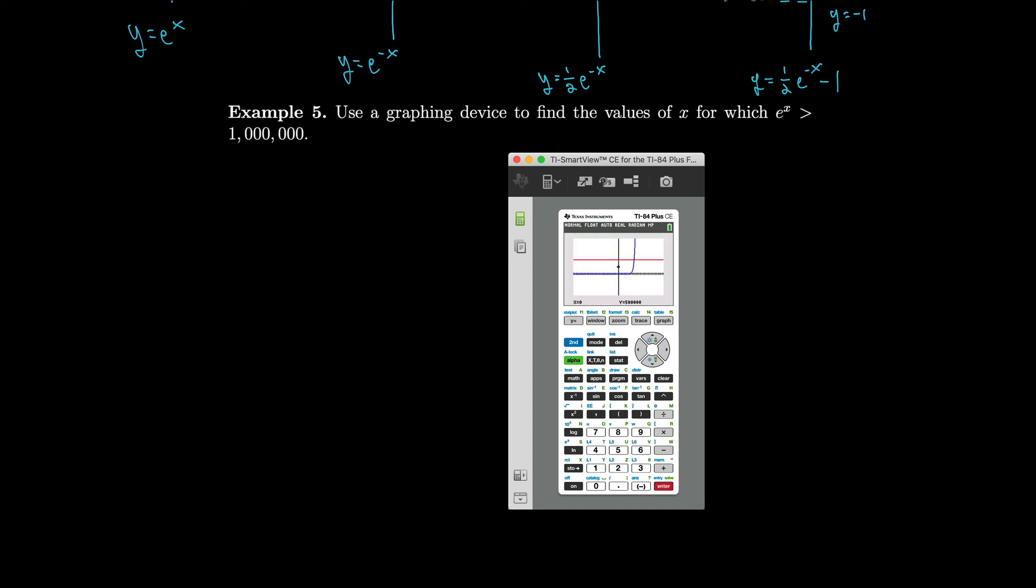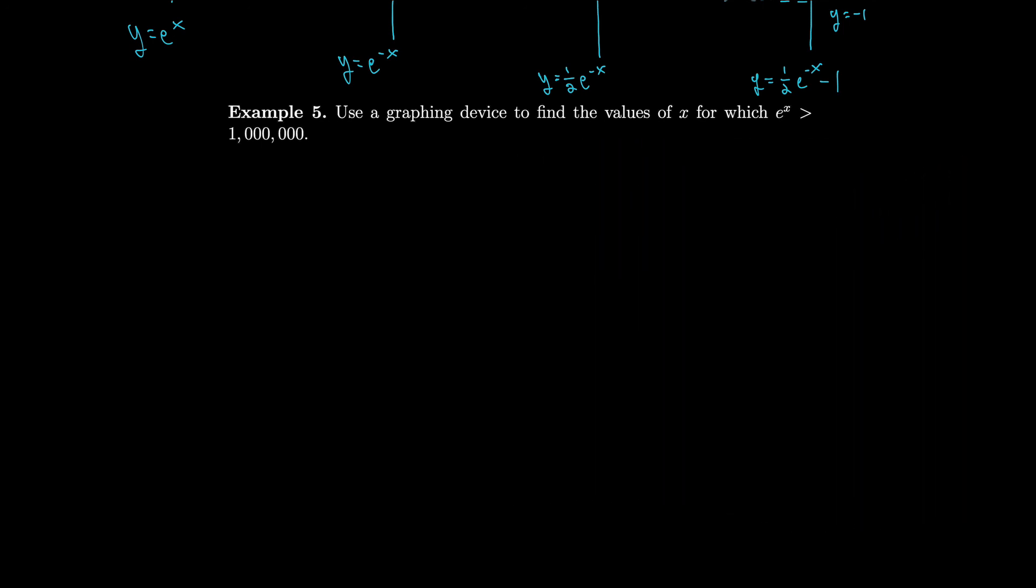Perfect. So, let's see where that point of intersection is. Second, calc, intersect. First curve. Second curve. And we will guess. Looks about 13.8 for that x. So, let's go back and say e to the x will be greater than a million when x is greater than 13.8.